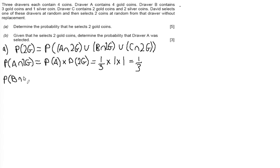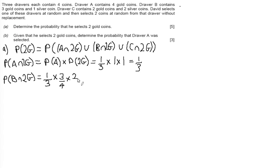For Draw B and two gold, a similar idea applies. The probability of picking Draw B is one third. Draw B contains three gold coins and one silver coin, so the probability of picking a gold coin first is three out of four. Since that coin is not replaced, there are two gold coins left out of three remaining coins. After some cancellation, this gives us one sixth.